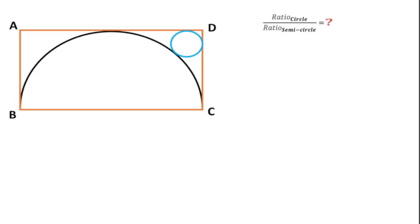Welcome to Definite Mind. In this question there is a rectangle ABCD and a semicircle and a circle. We have to find the ratio of this circle to this semicircle.